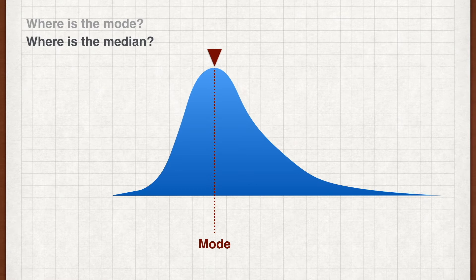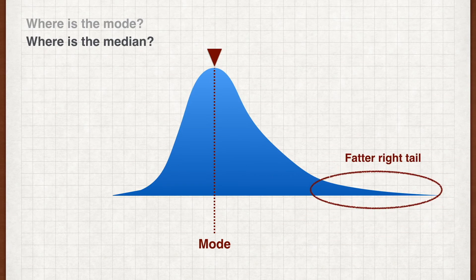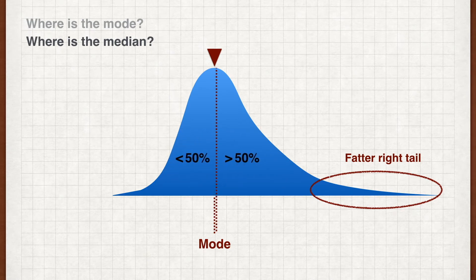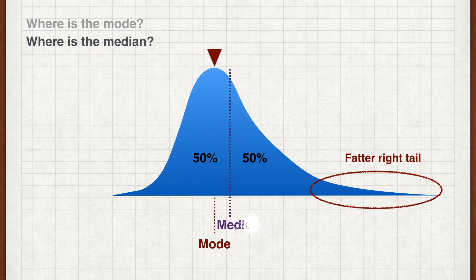We know that the median is the value which has fifty percent of observations less than it and fifty percent more than it. Given that the distribution has a fatter right tail, we know there are more observations to the right of the mode than to the left. So in order to balance it, the median has to be to the right of the mode.